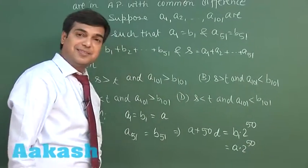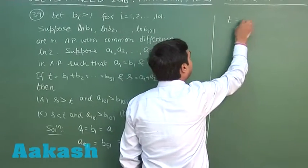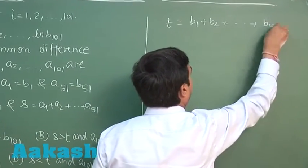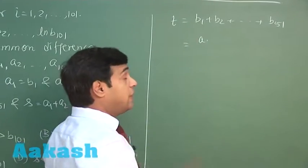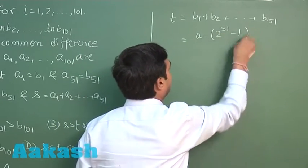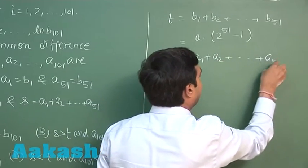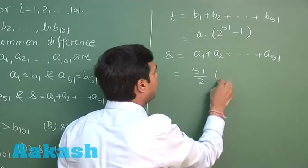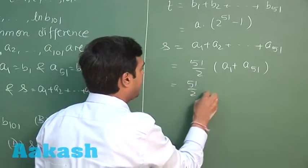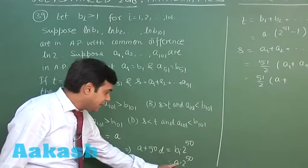T, the sum of 51 terms of the b-series: T = b1 + b2 + ... + b51. Since b1 = a and the series is GP with ratio 2, T = a × (2^51 − 1)/(2 − 1). For S = a1 + a2 + ... + a51, this is 51/2 × (a1 + a51) = 51/2 × (a + a × 2^50), since a51 = b51 = a × 2^50.